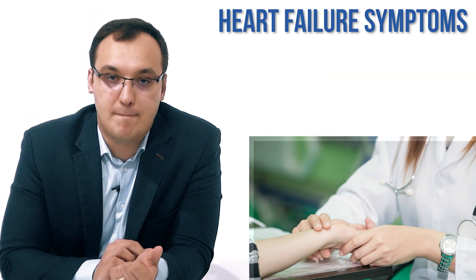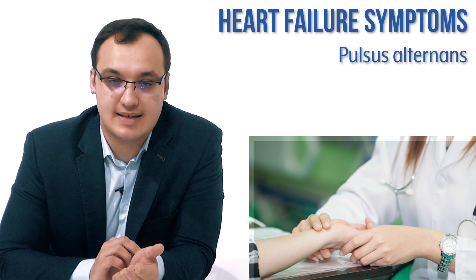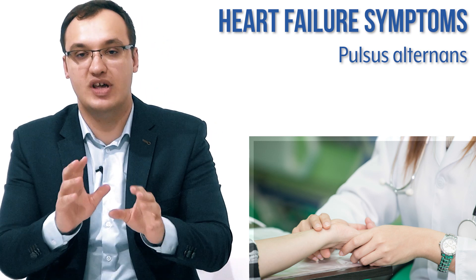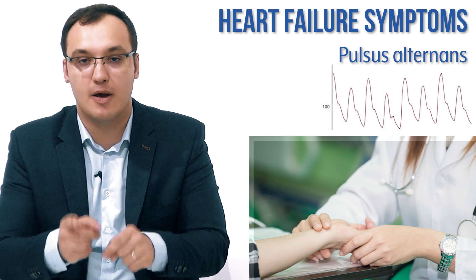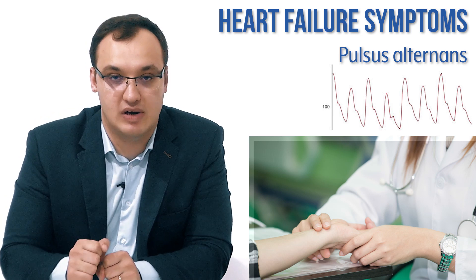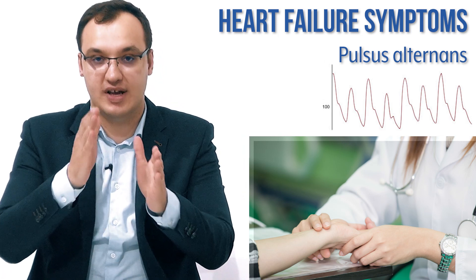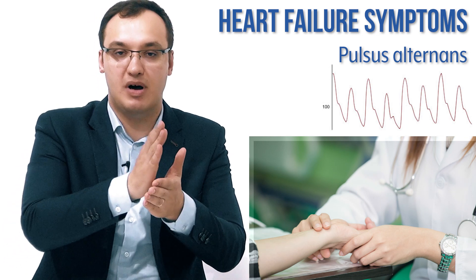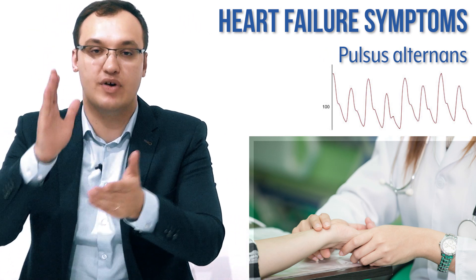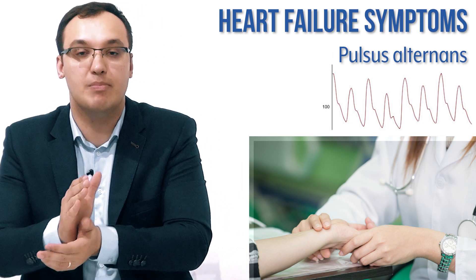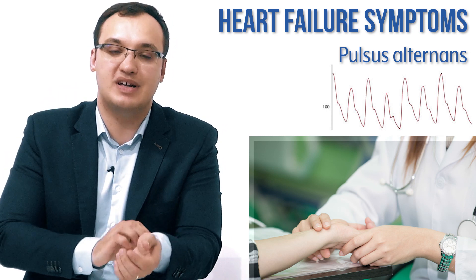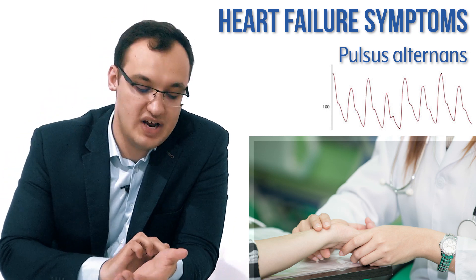What we can also check is something called pulsus alternans. This means the pulse is alternating between a strong and a weak pulse, and it's spaced evenly. So we have a strong pulse, then a weak pulse, then a strong pulse, then a weak pulse — very alternating. This is something you can feel in the radial artery.